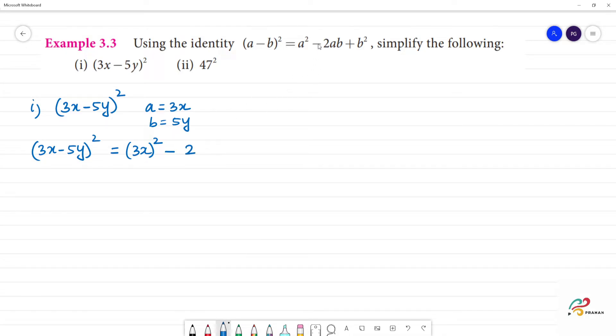Then the formula: a² minus 2ab plus b². The a value is 3x, b value is 5y. (3x)² is 3x into 3x. Then 3 times 3 is 9, x into x is x². 9x².